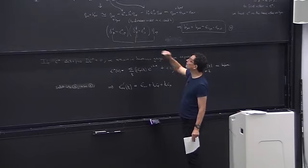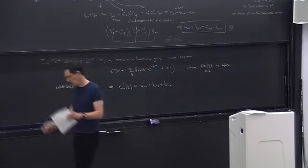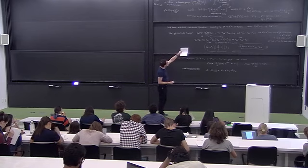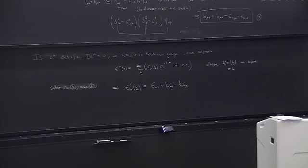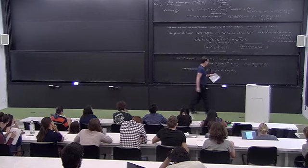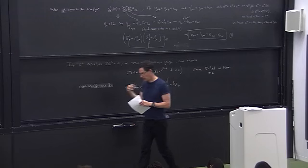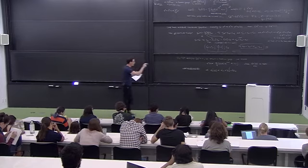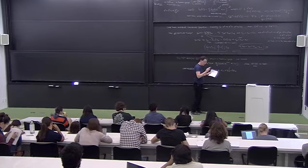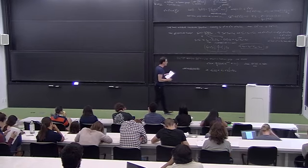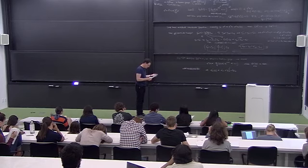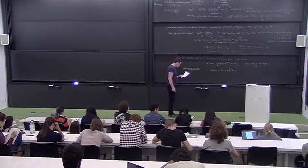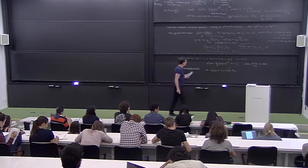Whereas it looked like we had 10 complex constants in the gravitational wave, the transverse trace-reversed condition gives us four equations reducing it to six. We still have four arbitrary constants to play with at every wave vector k, which we can use to change the polarization tensor into a more convenient canonical form.